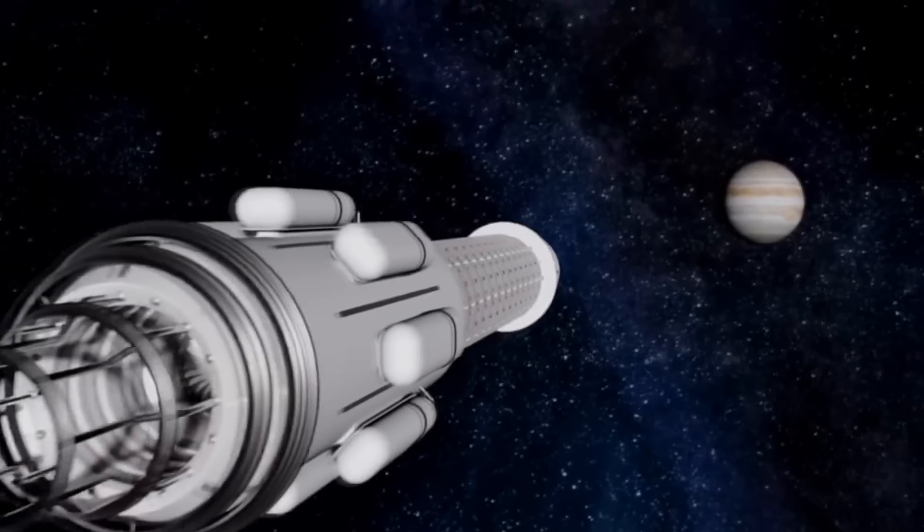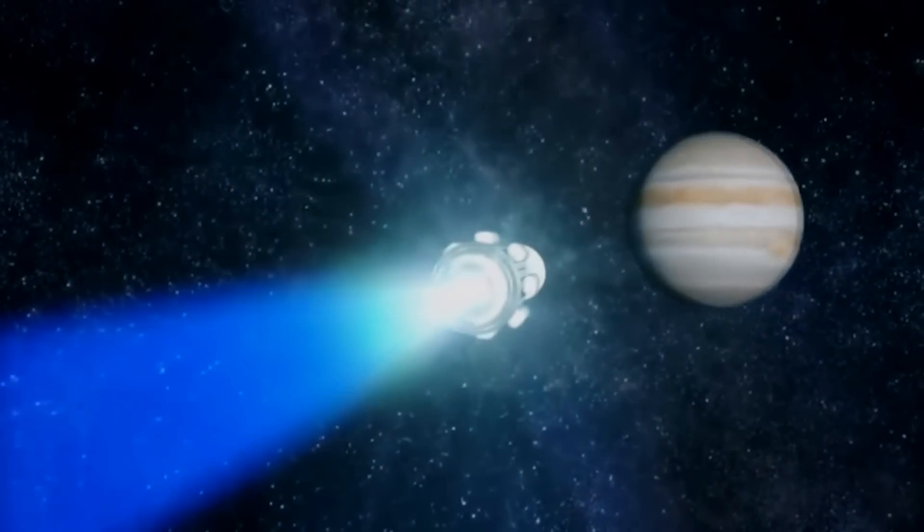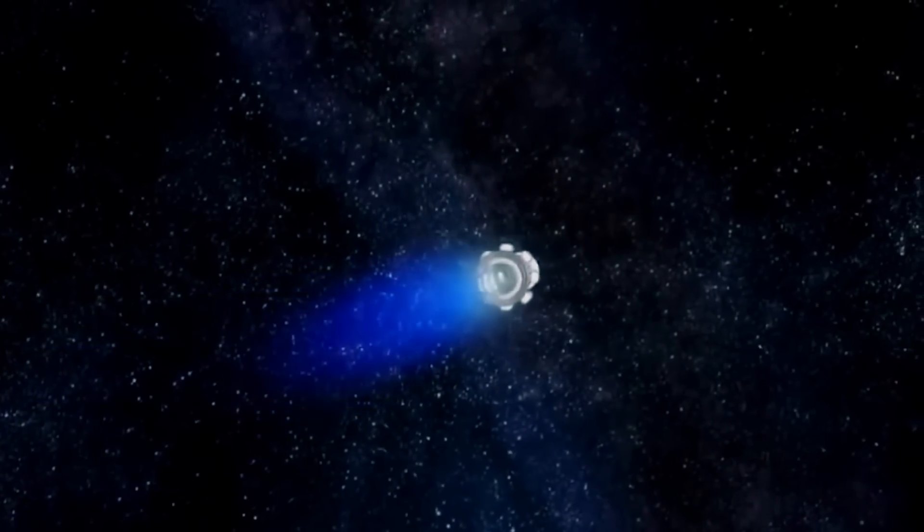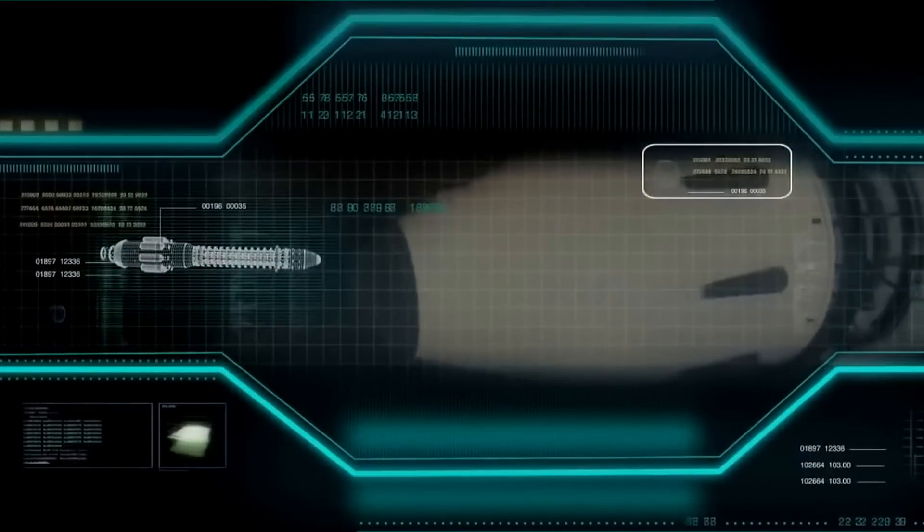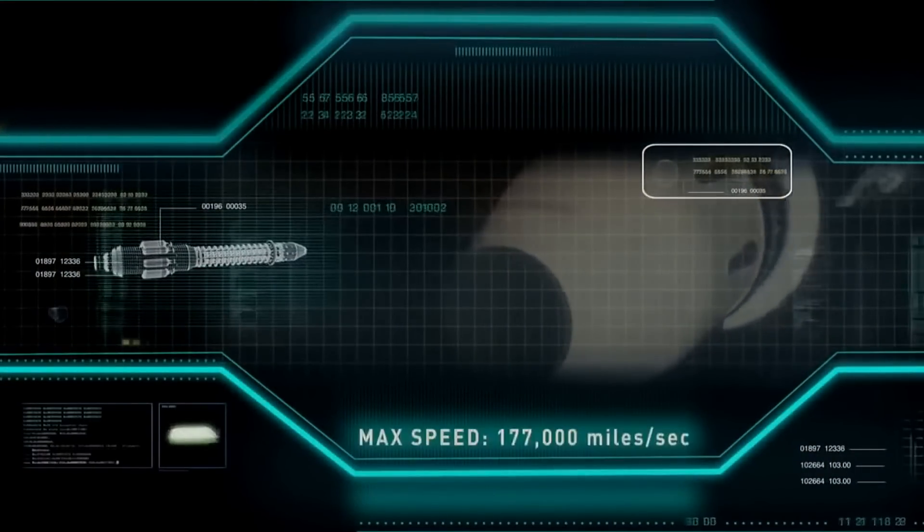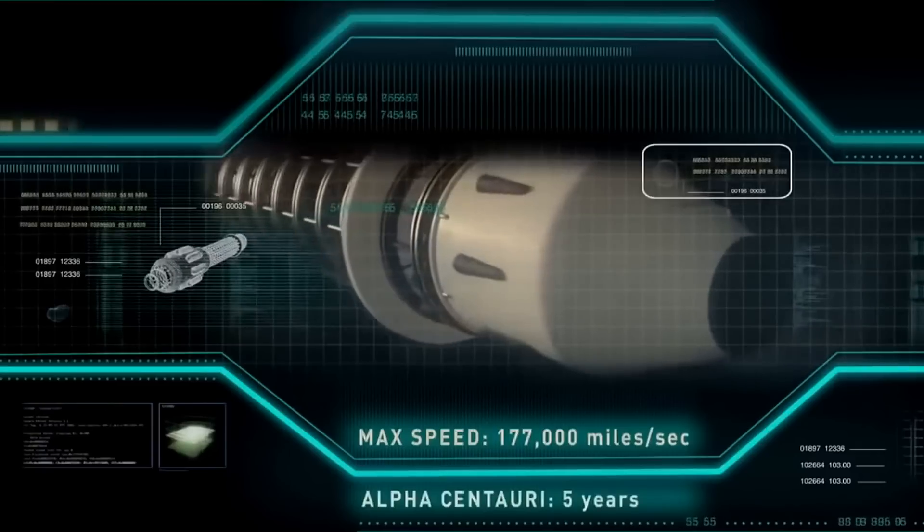An antimatter ship could achieve unbelievable velocities, cruising just below light speed, nearly matching the speed of a star beam streaking across the galaxy. Travel time from Earth to Alpha Centauri, four and a half light years distant? About five years.